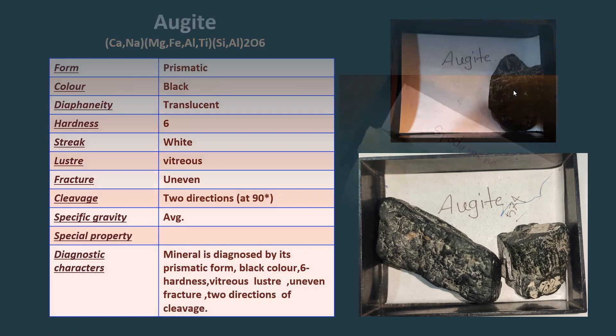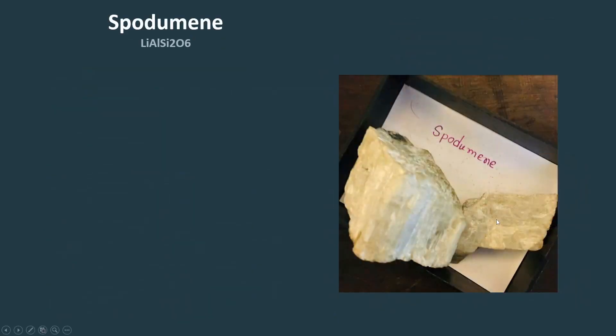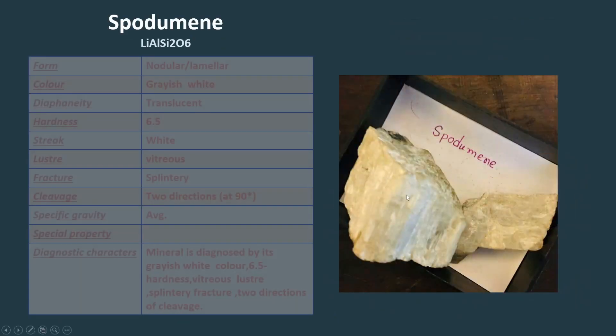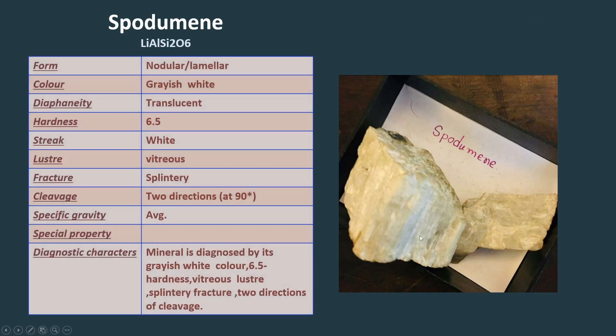Our last pyroxene mineral is spodumene, which can be diagnosed by its nodular or lamellar form, grayish white color, 6.5 hardness, white streak, vitreous lustre, splintery fracture, and two-directional cleavage at 90 degrees.